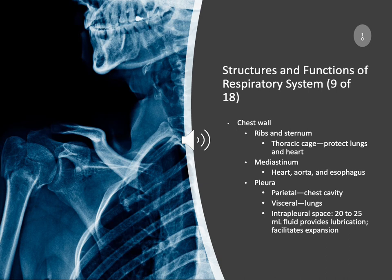When we're talking about the structures and functions of the respiratory system, remember lungs are constantly moving — breathing is an involuntary reaction. You wouldn't want those alveolar sacs to keep hitting nothingness, so it's got to be coated with something to make that slide smooth. If it isn't coated, you run into some pretty heavy-duty problems. The chest wall has your ribs and your sternum. Your thoracic cage protects the lungs and the heart.